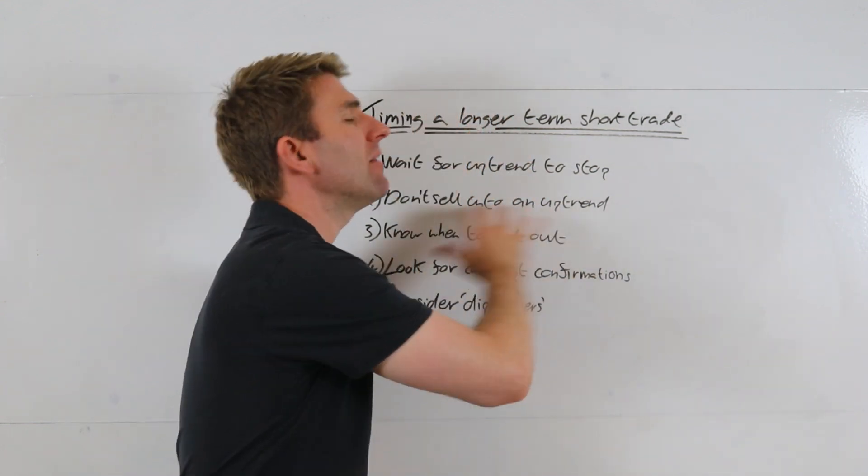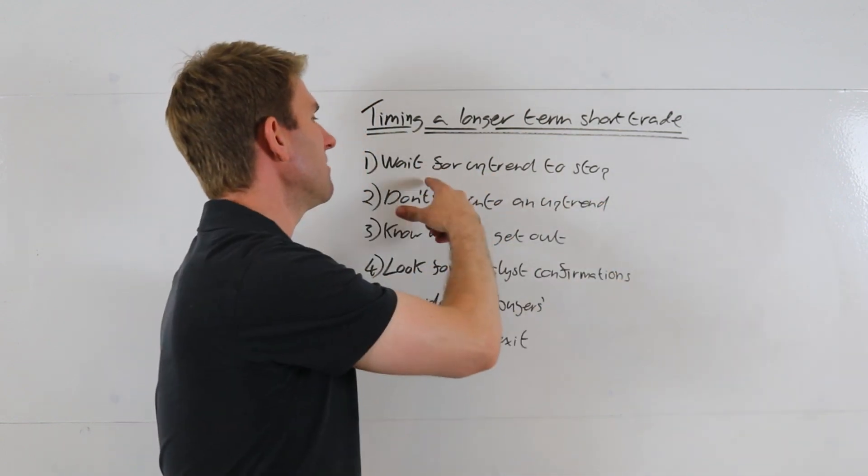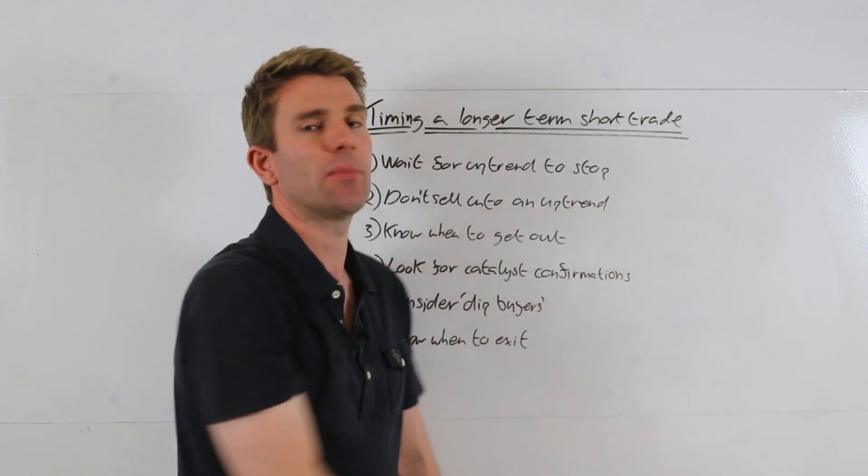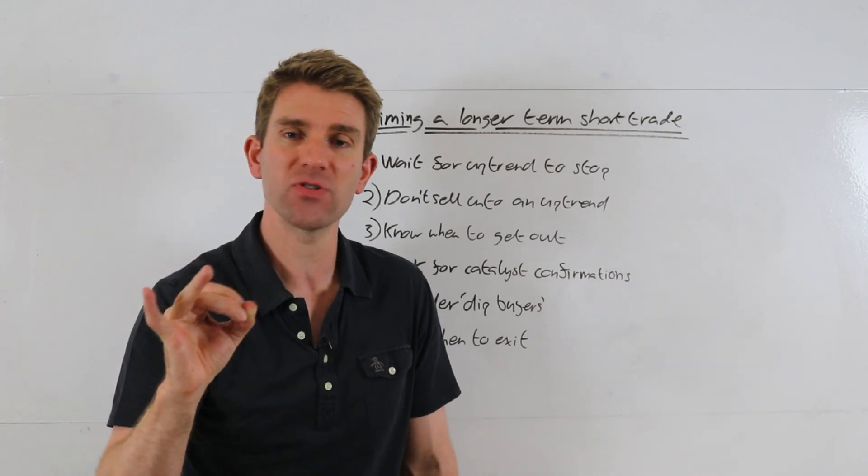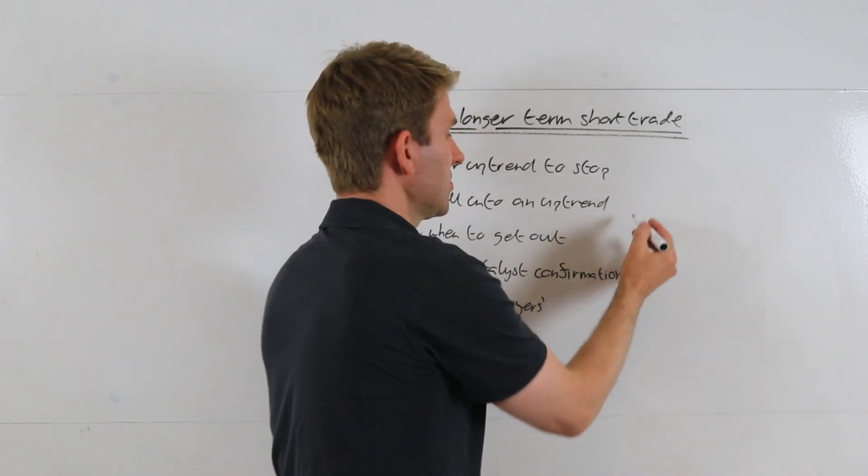So the golden rule is to be very careful about uptrends. At least wait for this—number one is to wait for the uptrend to stop. Don't sell into the uptrend, but at least wait until perhaps it starts to be range bound. So there's a little bit of doubt.